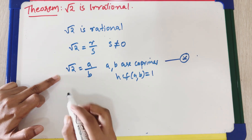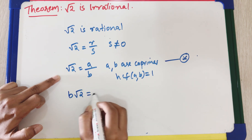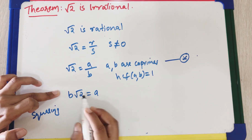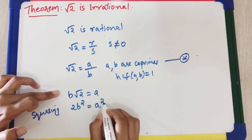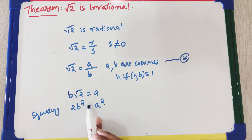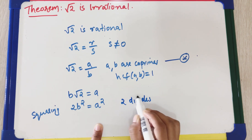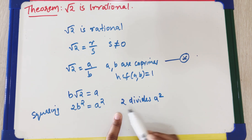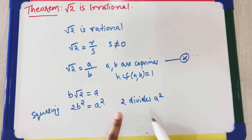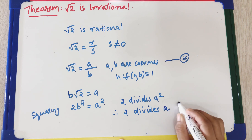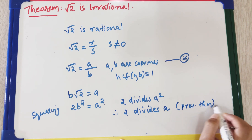Taking b to the other side, we get b√2 = a. Squaring both sides gives 2b² = a², that is, a² = 2b². This means 2 divides a². Since 2 is a prime and 2 divides a², by the previous theorem — if p is prime and p divides a² then p divides a — we can conclude that 2 divides a.